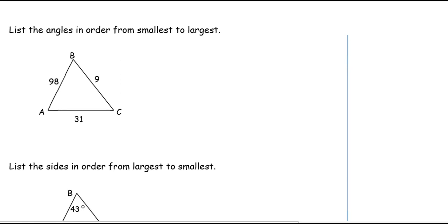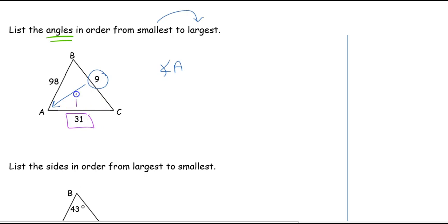Let's use this idea. We want to list the angles in order from smallest to largest. In my diagram I don't have any angle measures given, so I use side lengths to order the angles. The smallest angle is across from the smallest side. The smallest side is 9, which is across from angle A — so angle A is the smallest angle. The next smallest side is 31, which is across from B — so angle B is next. The largest side is 98, across from angle C. So the order from smallest to largest is angle A, B, C.